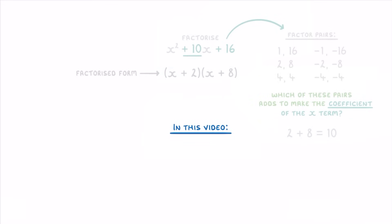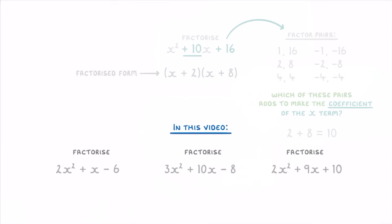In today's video though, we're going to look at questions where the coefficient of the x² term — the number in front of the x² — is something more than 1, like 2, 3, or 4.